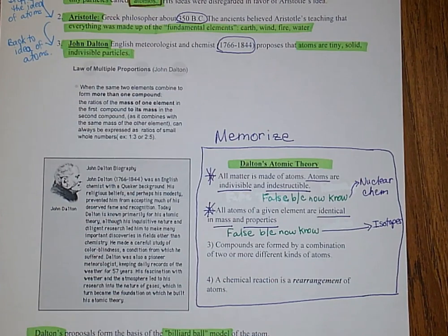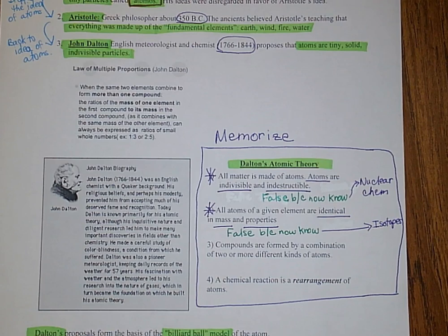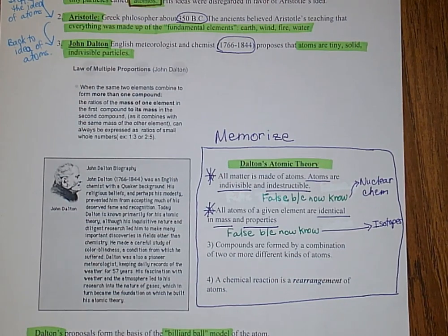The second postulate said that all atoms of a given element are identical in mass and properties. The third postulate says compounds are formed by a combination of two or more different kinds of atoms. The fourth postulate says a chemical reaction is a rearrangement of atoms.